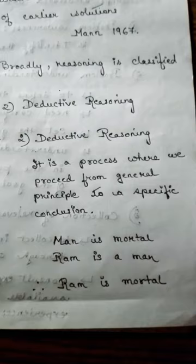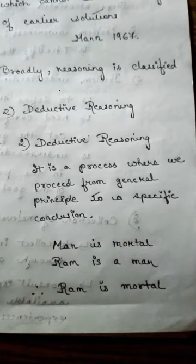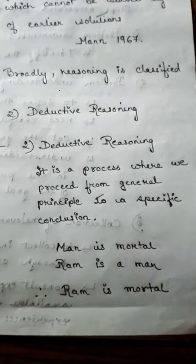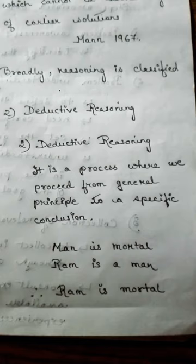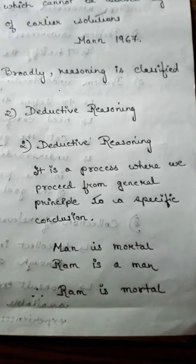The first statement, 'Man is mortal,' is a general principle applicable to every human being — that means every human being is mortal. And the conclusion is a specific one: since Ram is a man, therefore Ram is mortal. Deductive reasoning is a logical process where you proceed from general observations or facts to a more specific conclusion. That is all about inductive and deductive reasoning.